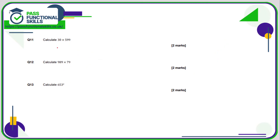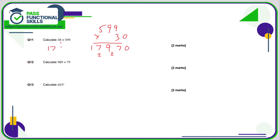Question 11: 30 times 599. I'm just going to do 599 multiplied by 3 and then put the 0 on the end. 3 nines are 27, 7 carry 2; 3 nines are 27 plus 2 is 29, 9 carry 2; 5 threes are 15 plus 2 is 17. So 599 times 3 is 1797, and 599 times 30 is 17,970.